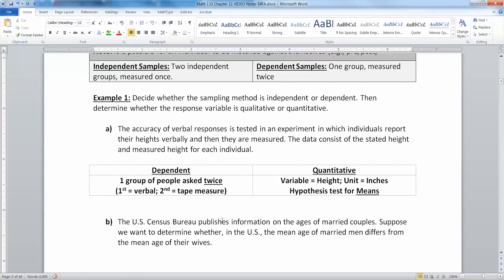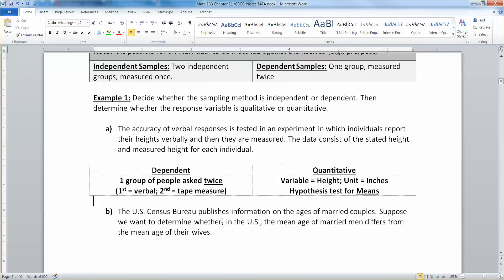All right, now suppose the U.S. Census Bureau publishes information on the ages of married couples. Suppose we want to determine whether in the U.S. the mean age of married men differs from the mean age of their wives. Well, that's key. It's their wives. And this one, by the way, is for each individual, so you can spot that it's dependent. That's kind of the clue it's dependent.